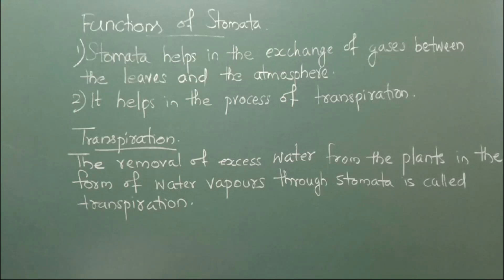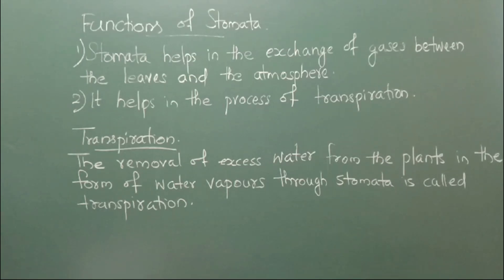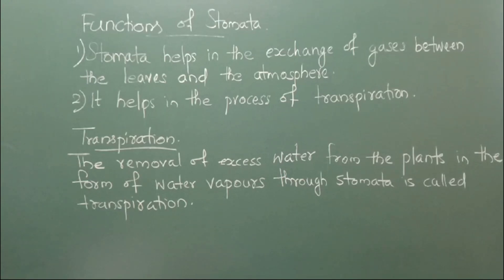The second function is that stomata helps in the process of transpiration. Transpiration is the removal of excess water from the plants in the form of water vapor through the stomata. When the guard cells fill with water, they bulge out and the stomata gets opened, and through the stomata the leaves lose water — that is called transpiration. Once the water is lost, the stomata gets closed.